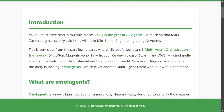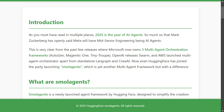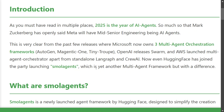Before we jump into Smolagents, AI agents are going to be everywhere in 2025. Towards late 2024 we now have multiple AI agent frameworks released. Microsoft owns three multi-agent frameworks: Autogen, Magentic-One, and TinyTroupe. OpenAI released Swarm, AWS released Multi-Agent Orchestrator, and LangGraph and CrewAI already existed. There are just too many frameworks now, and Smolagents is the newest on the list.